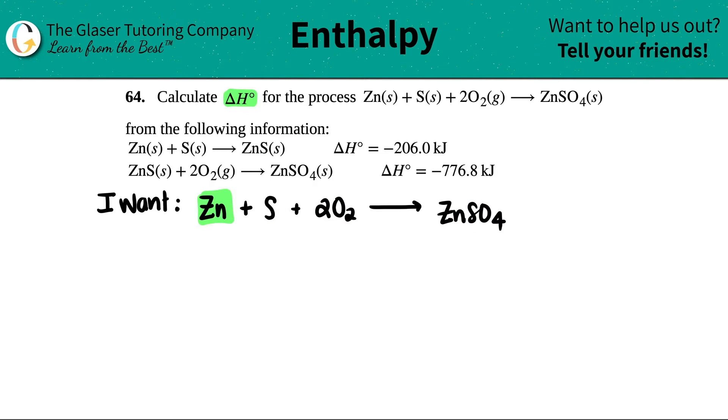So what we're going to do is look through the two equations. Let's call this first equation number one, and this second equation number two. Look through the two equations and tell me which one has the Zn in it. It's equation number one. Here it is. This is just the zinc. I don't classify it as zinc S because it's not Zn S, it's just Zn.